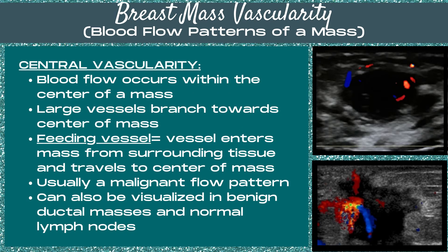The bottom image on this slide represents central vascularity — large feeding vessels moving towards the center of the mass with a chaotic pattern. With central vascularity, blood flow occurs within the center of the mass, with large vessels branching inward. These feeding vessels enter the mass from surrounding tissue and travel to the center. Central vascularity is usually a malignant flow pattern, but can also be visualized in benign ductal masses and normal lymph nodes.